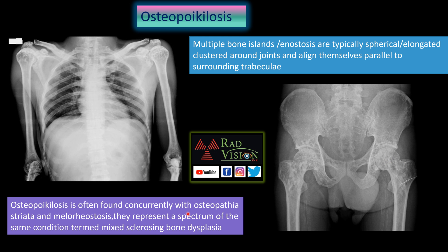Osteopoikilosis is most commonly associated with osteopathia striata or melorheostosis, representing overlap syndromes or mixed sclerosing dysplasias.